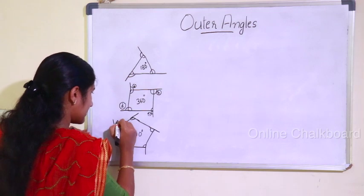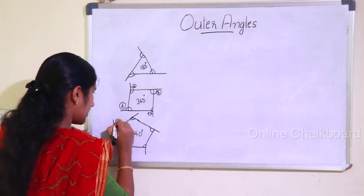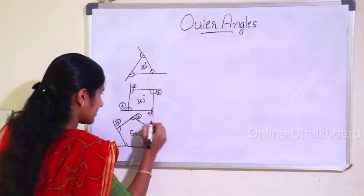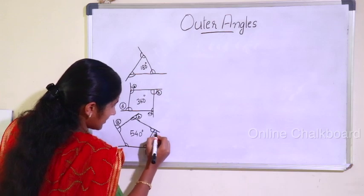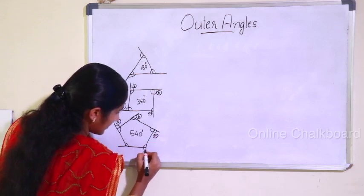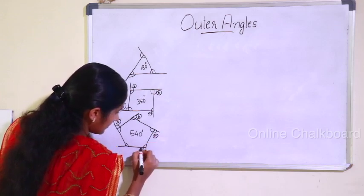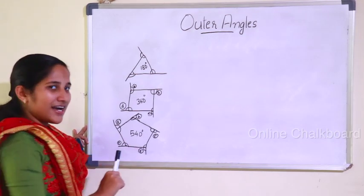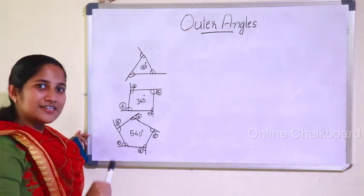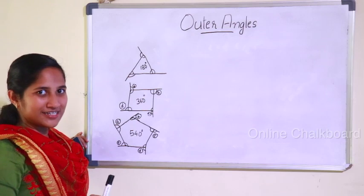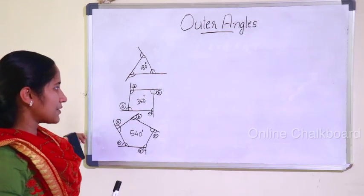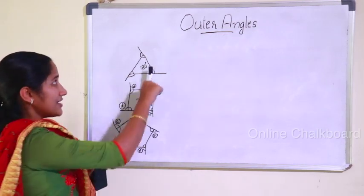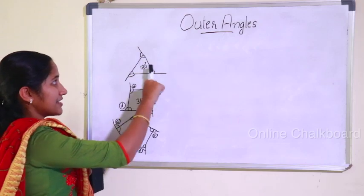We compare angle A to angle A. This is the angle of B, this is the angle of C, and this is the angle of D. If we look at the angles, these figures show the exterior angles and outer angles. This is the sum of the exterior angles.